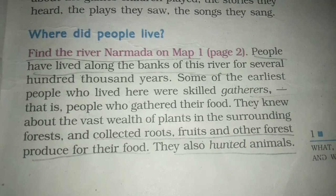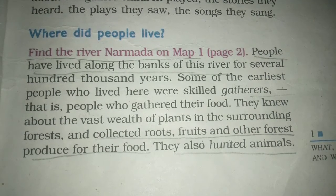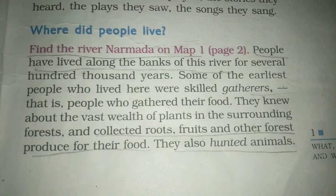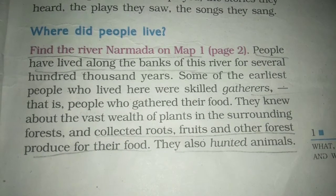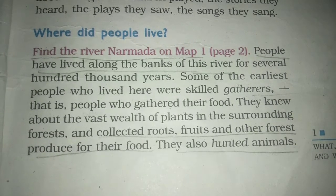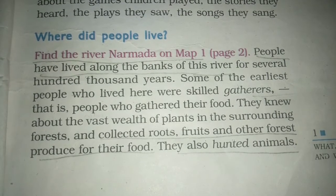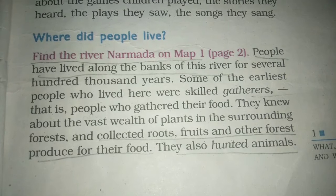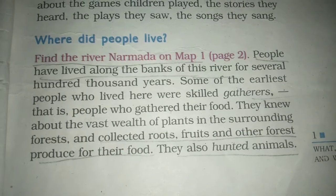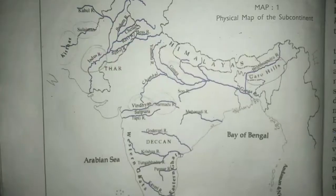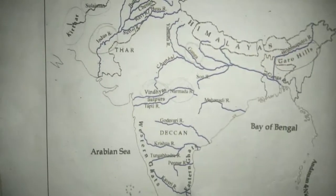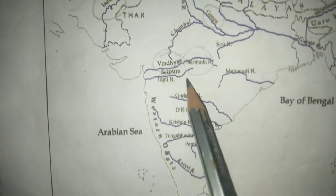The period of man's existence for which we have no written records is called prehistory. Earliest people were hunter-gatherers, so they wandered from one place to another and did not have permanent settlements, but mainly wandered along the banks of rivers like the Narmada. See the map of the subcontinent — here is the Narmada river.